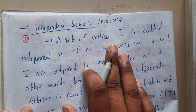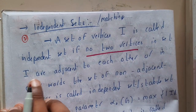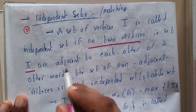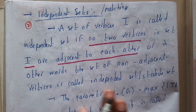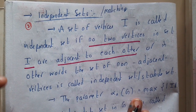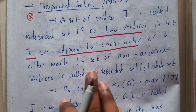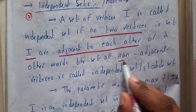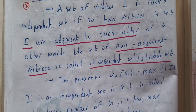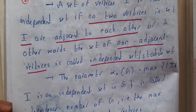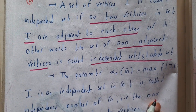A set of vertices I is called independent if no two vertices in the set I are adjacent to each other. If they are not adjacent to each other, then they belong to a single set — that set is called an independent set, or stable set. I hope everyone got a clear idea about what an independent set is.